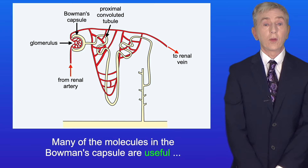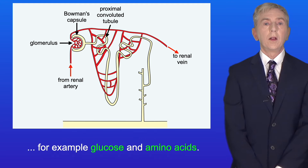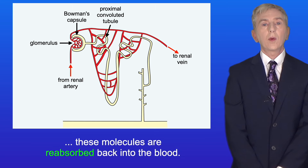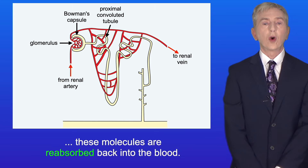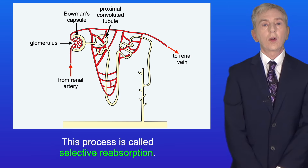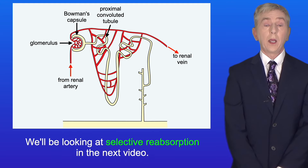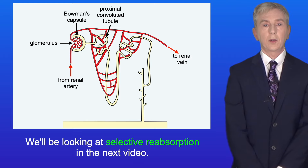Many of the molecules in the Bowman's capsule are useful, for example glucose and amino acids. So in the next stage of the nephron, these molecules are reabsorbed back into the blood. This process is called selective reabsorption, and this takes place in the proximal convoluted tubule. We'll be looking at selective reabsorption in the next video.